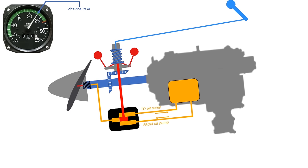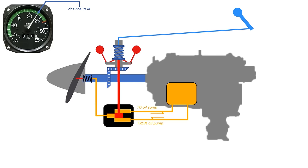So if we pitch back up, the governor will maintain RPM by decreasing propeller blade angle. Of course, pitching up and down isn't the only way that propeller blades can be made to change their speed.